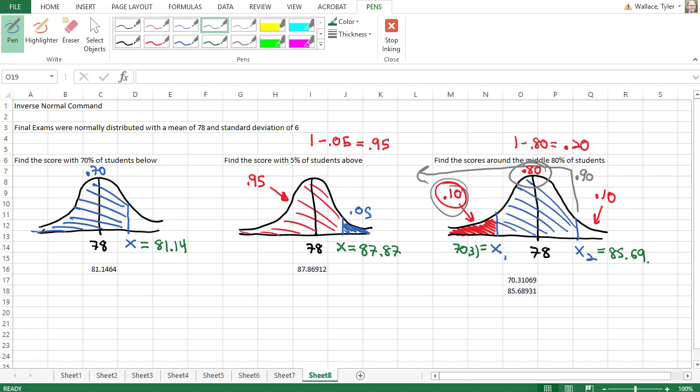When we know the probability, we know the area to the left, we can use the inverse normal command on Excel to find the x value that gives those areas, that gives those probabilities.